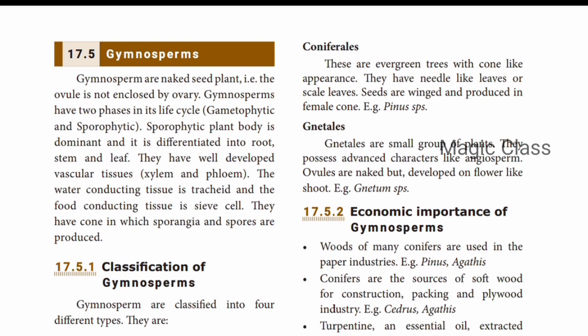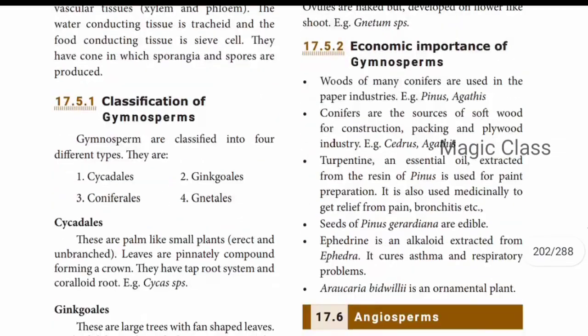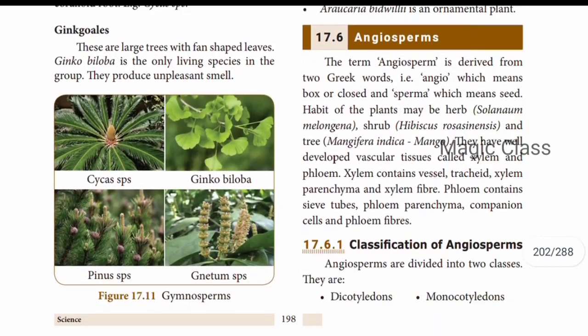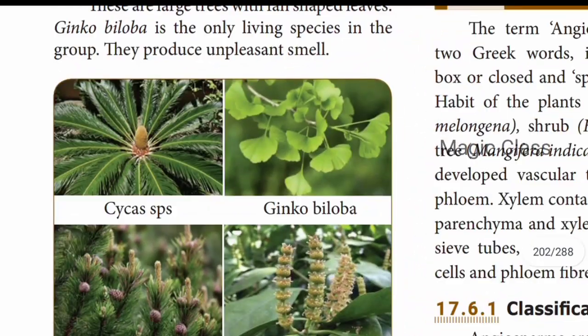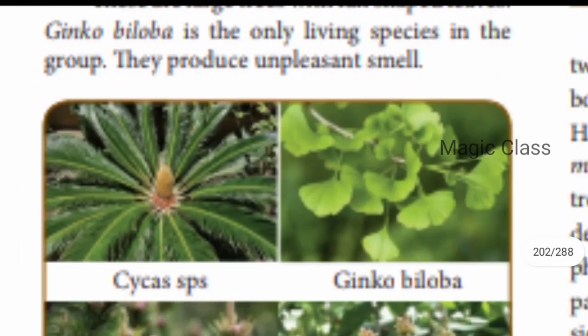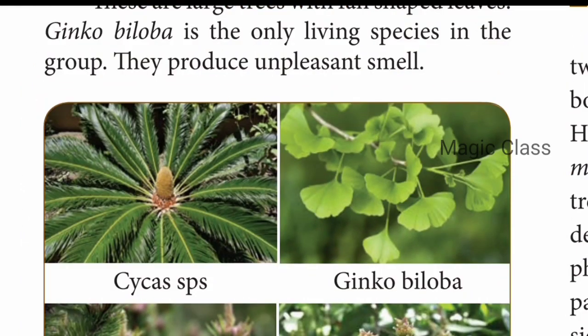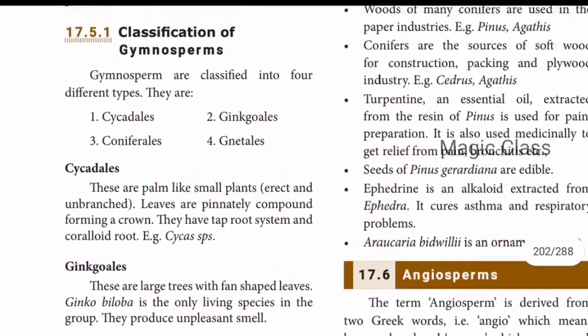The water conducting tissue is tracheids and the food conducting tissue is the sieve cell. Gymnosperms have cones in which the sporangia and spores are produced. In gardens, you can see the cycas, where the cone is the structure in which the sporangia and spores are produced.